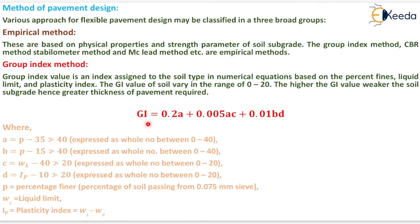Now group index value will be equal to 0.2a plus 0.005ac plus 0.01bd. Where a equals P minus 35 which should not be greater than 40. b equals P minus 15 which should not be greater than 40. c equals WL minus 40 which should not be greater than 20. d is IP minus 10 which should not be greater than 20. Now P is defined as the percentage finer, that is percentage of soil passing from 0.075 mm sieve. WL is the liquid limit of the soil and IP is the plasticity index of the soil which will be calculated by the formula WL minus WP, that is liquid limit minus plastic limit.